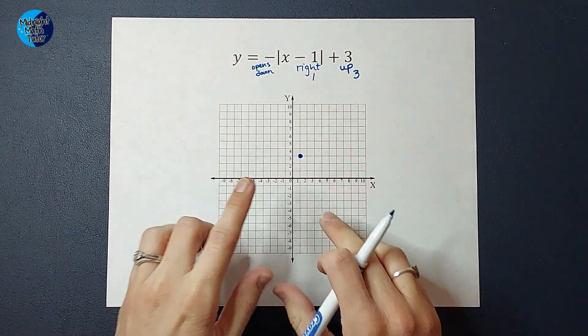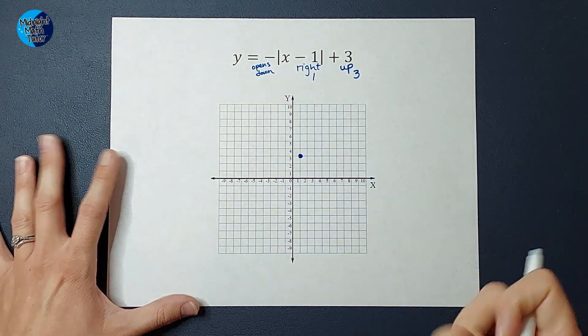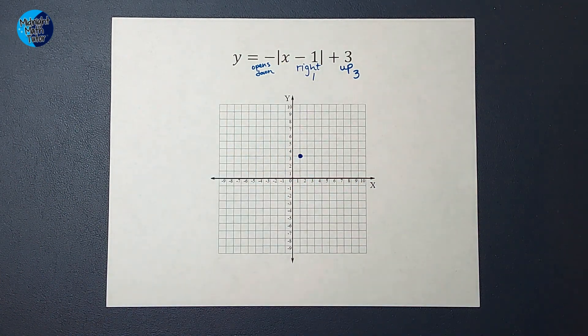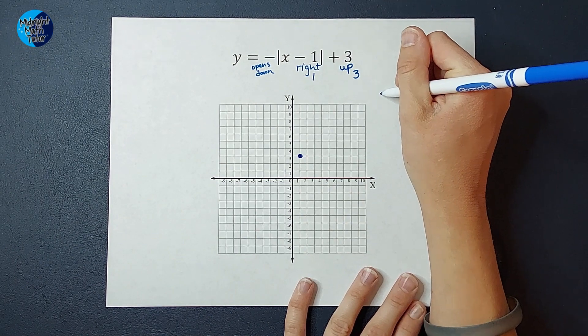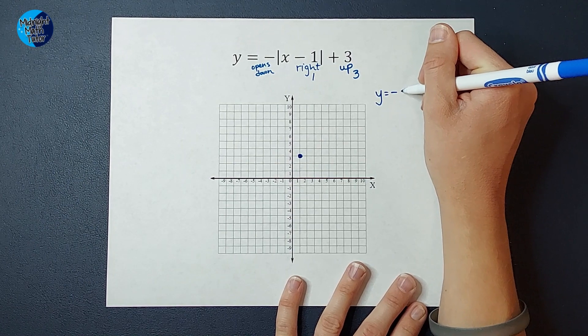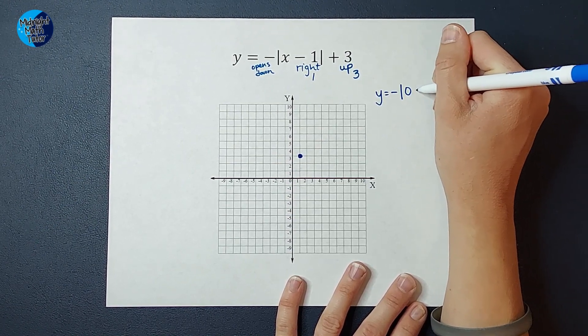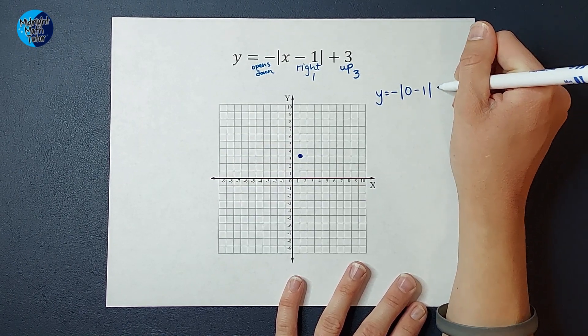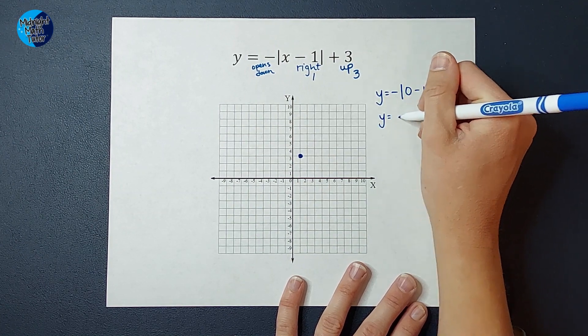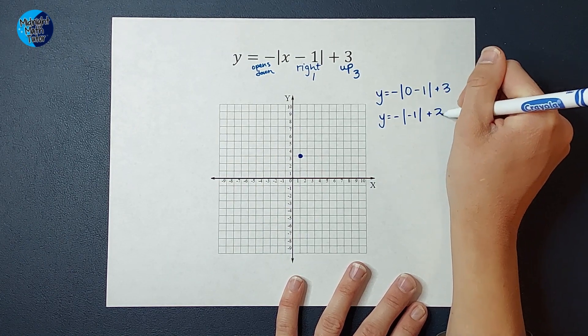So one thing we can do is figure out where it crosses the Y axis. And to figure that out, I'm going to plug in zero for X. So I'm going to have y equals a negative absolute value of, we're going to plug in zero for X minus one, end of the absolute value bars, plus three.